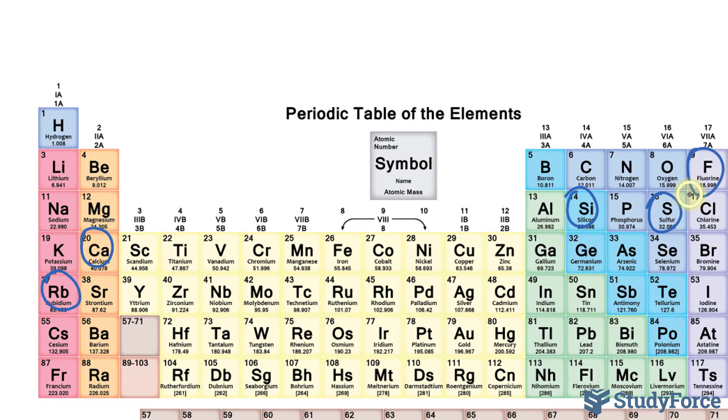Right from the get-go, we know that fluorine is going to be the smallest of them all because it has a lower principal quantum number than the rest.